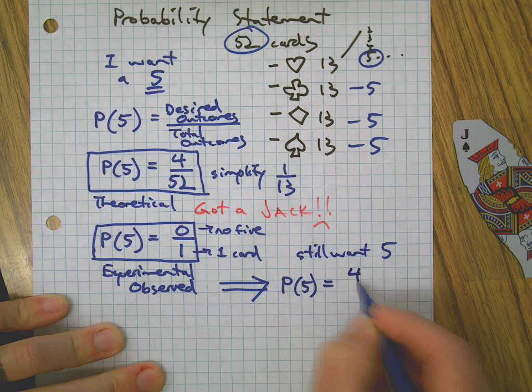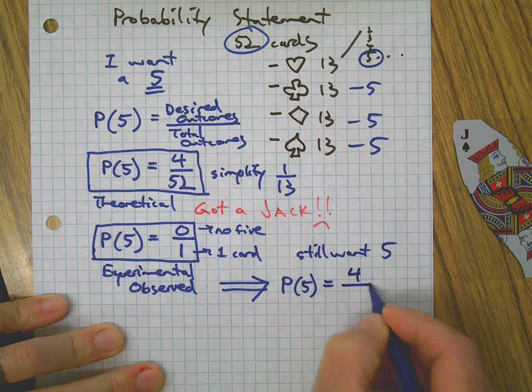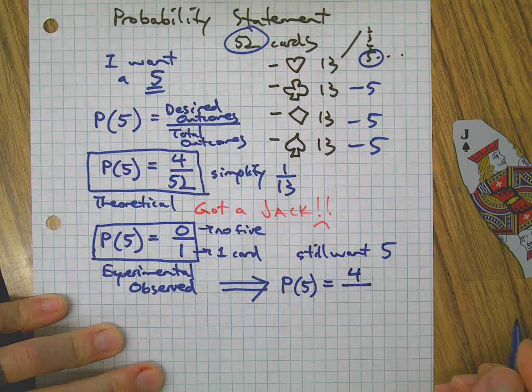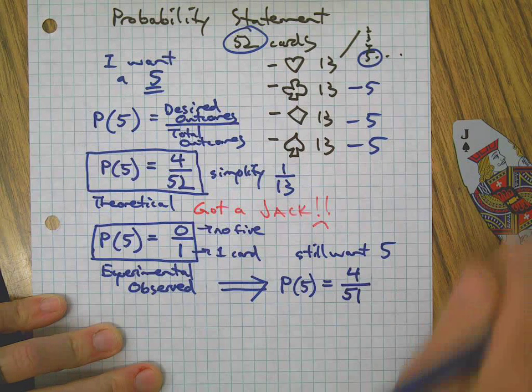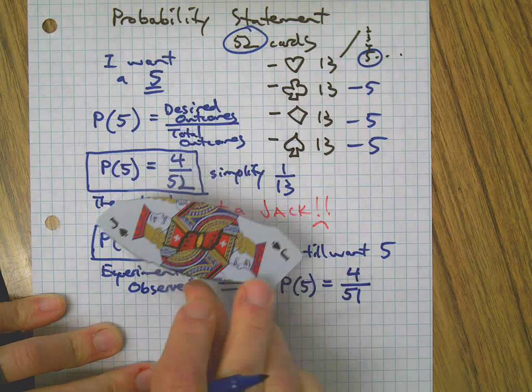So same thing: probability of a 5 is—there's still 4 of them in there, right, because I did not get one. How many cards are left in the deck now? 4 out of 51, because the jack here—I'm not going to put it back. Jack is not back.